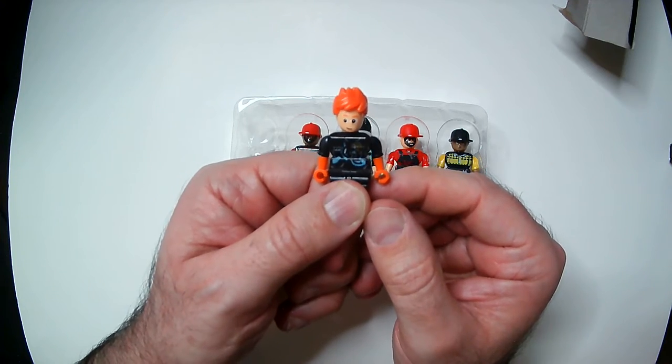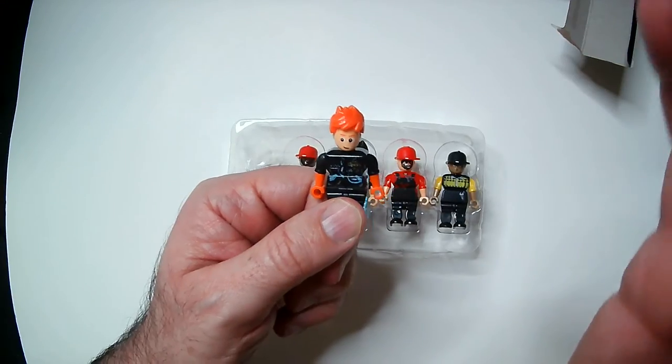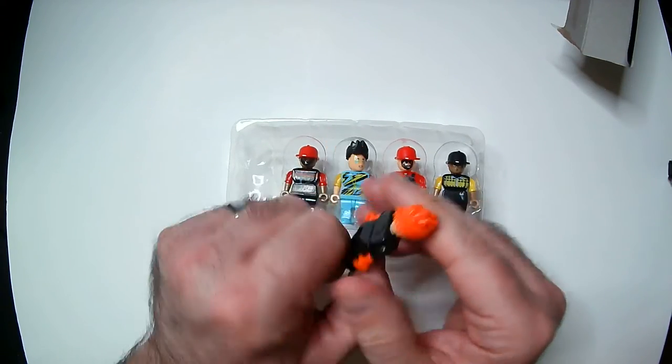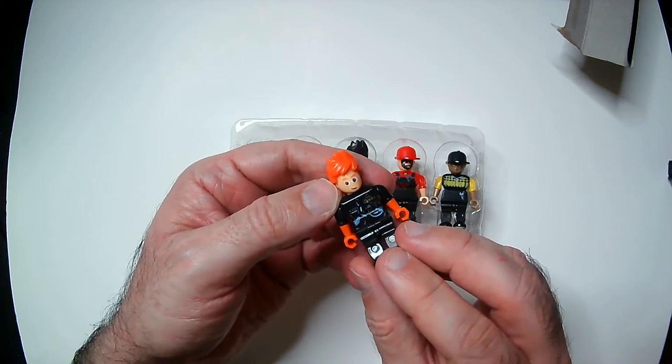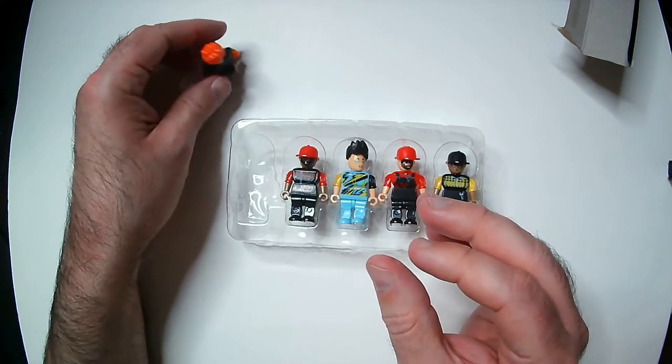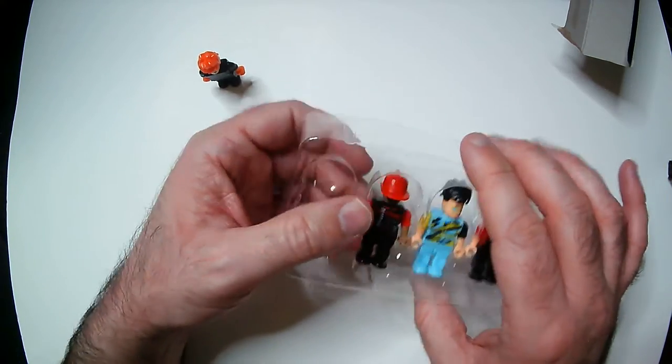The first guy looks like a racer. Got the fire hair and orange gloves. Doesn't look too bad. Black on with a little bit of detail on the shirt. He stands okay and stands fine when attached to a Lego block.